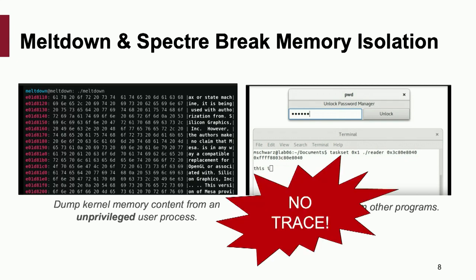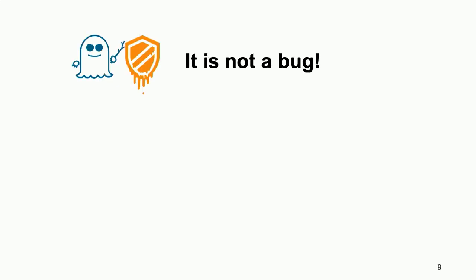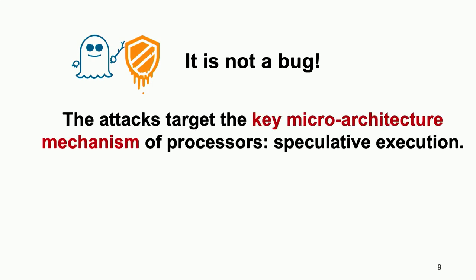Even worse, these attacks leave no traces. If you wonder whether we know Spectre or Meltdown happened in the wild, the answer is: even if it happens, we do not know, because no commercial system can detect such attacks — they happen at the microarchitecture level and leave no system logs. What scared people more is that Spectre and Meltdown are not even bugs; they are actually performance features that computer architects put into processors 20 years ago.